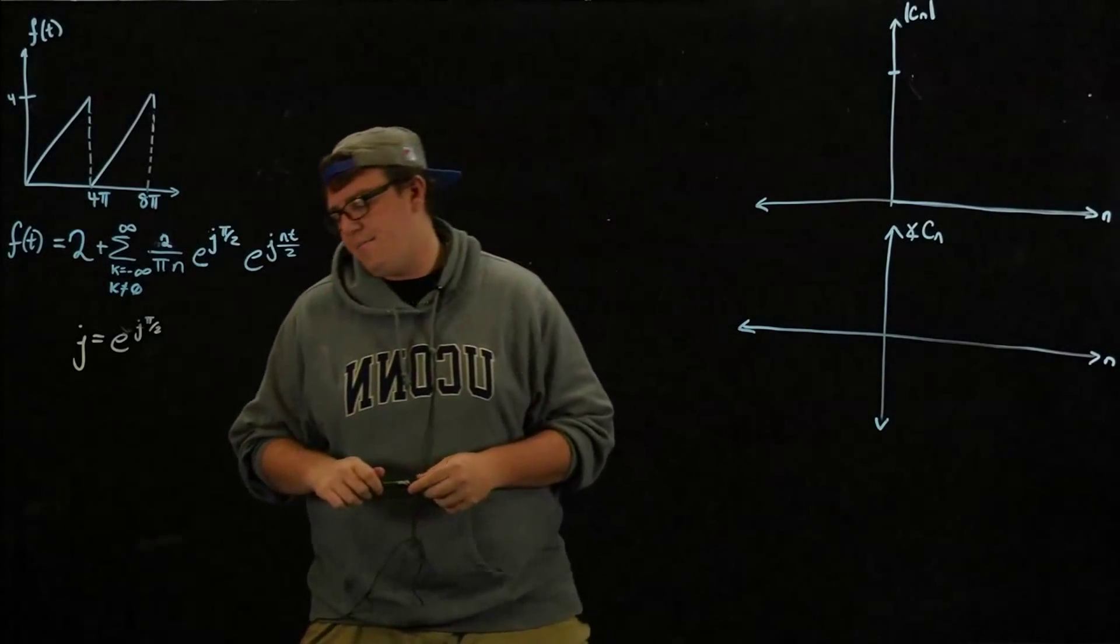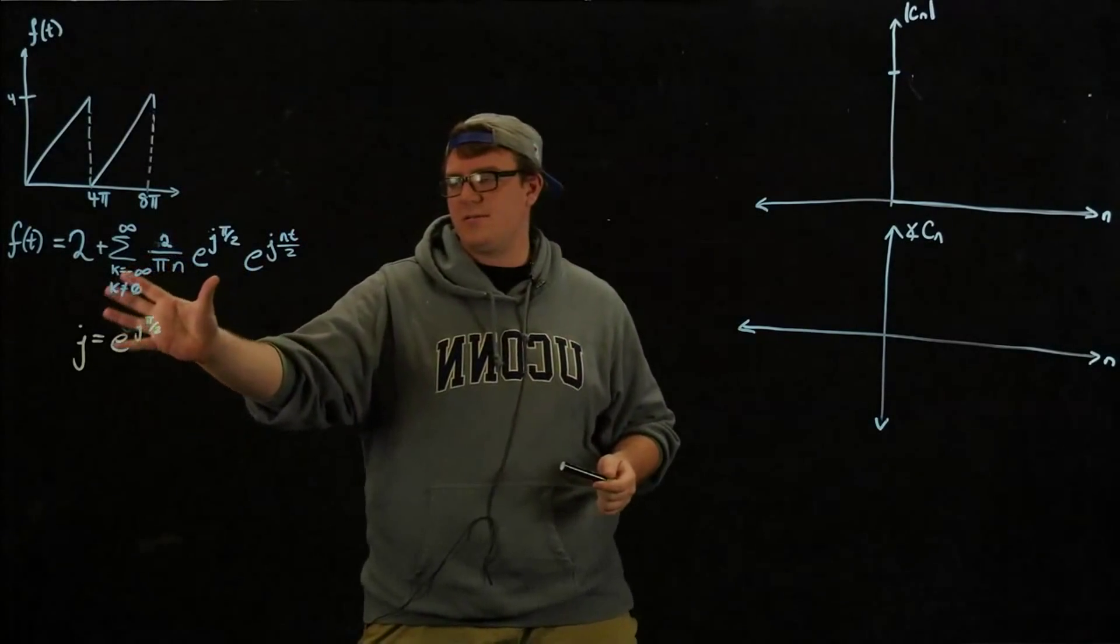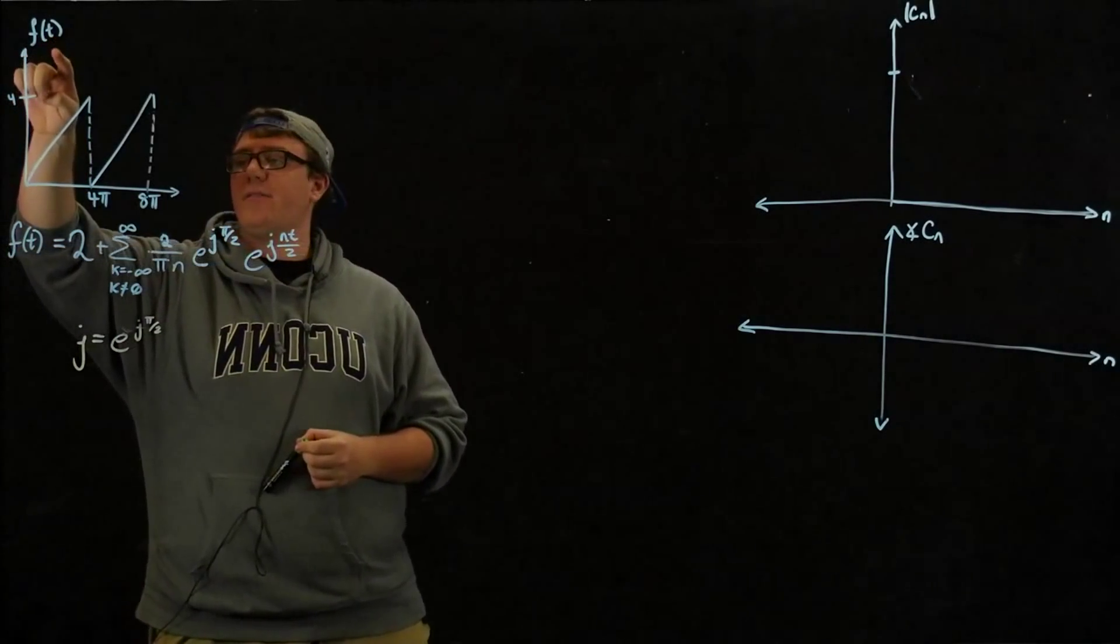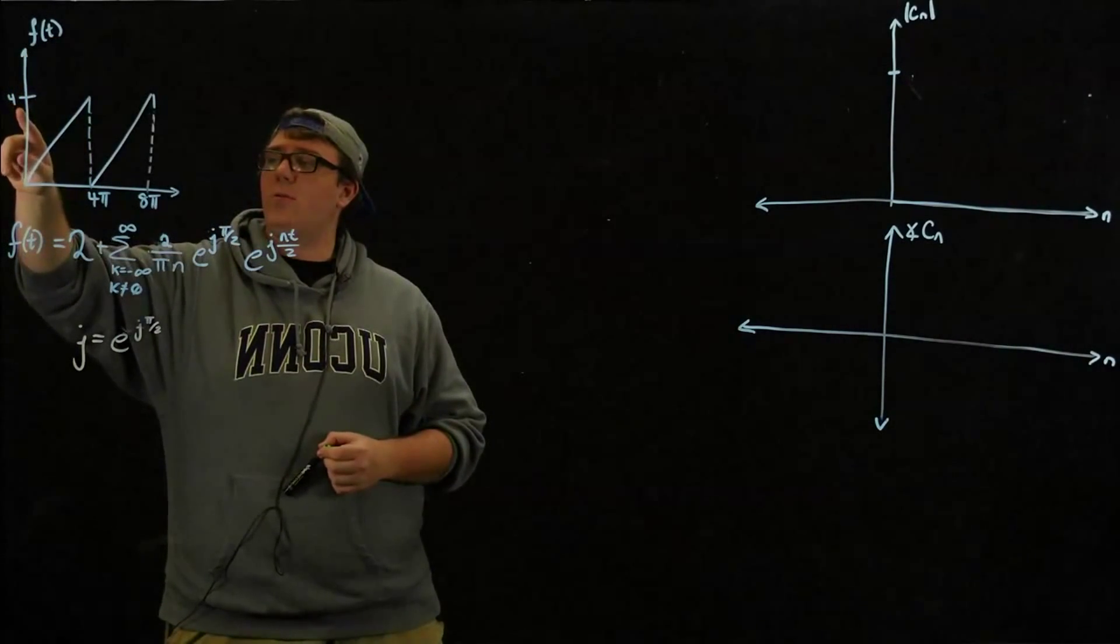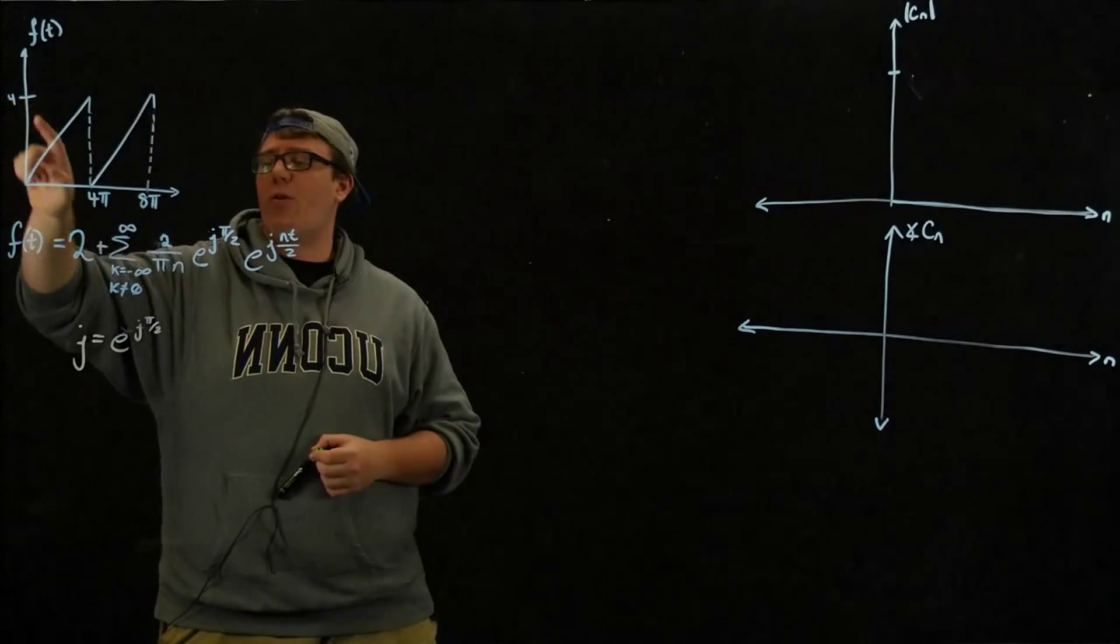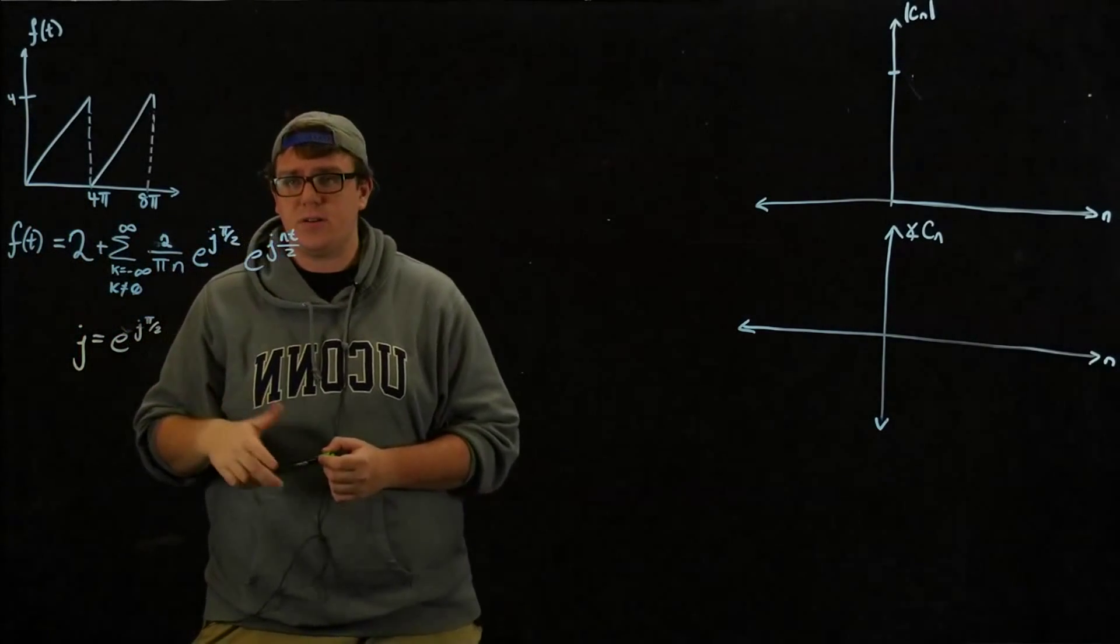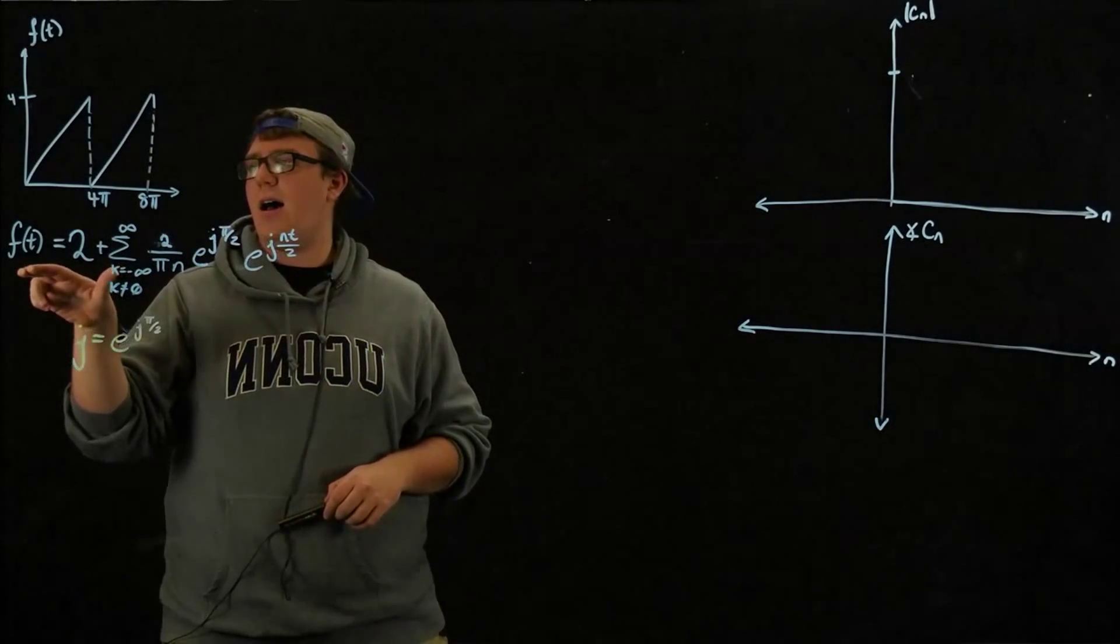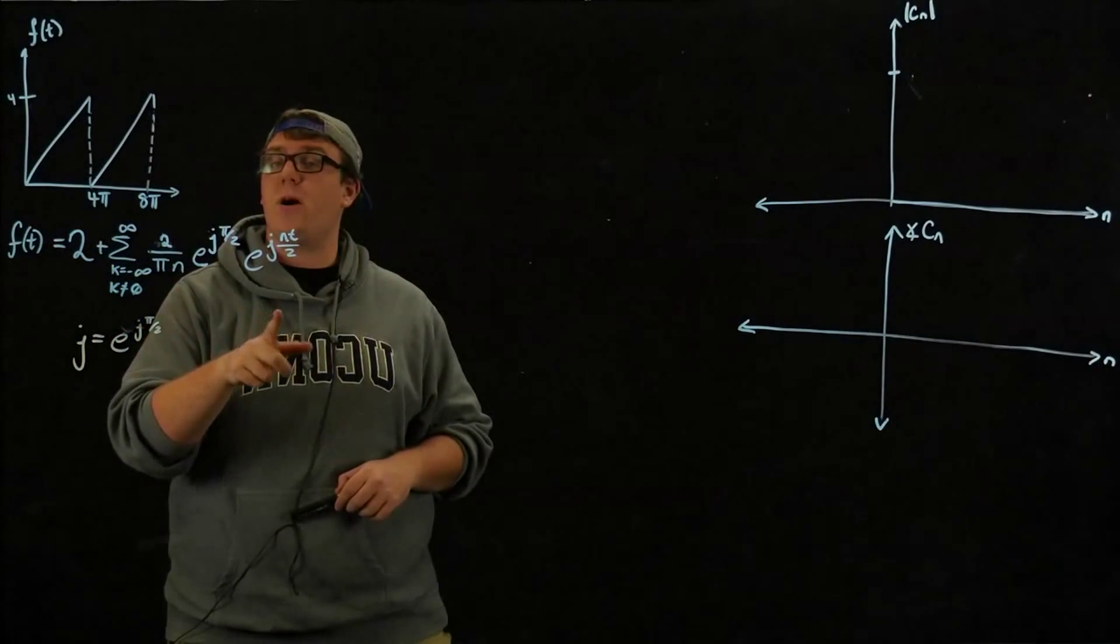We're going to use last week's results as a starting point. So last week we had this function here, f of t, with amplitude 4 and 4 pi, what we call a sawtooth wave. And we found that this f of t can be expressed as a Fourier series in this way.